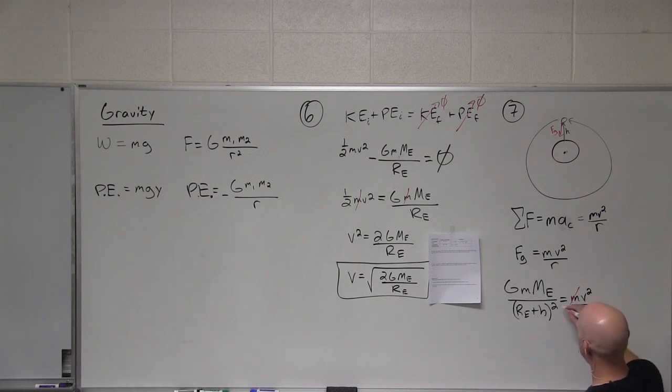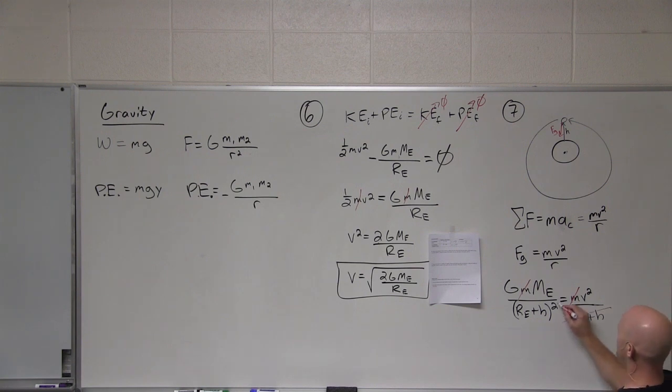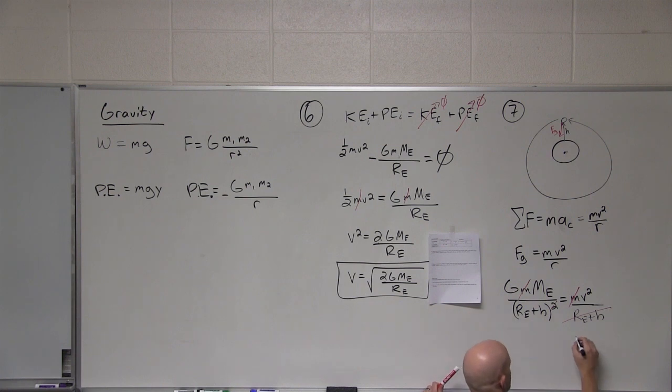And this is equal to mv squared over r. Notice the mass of the satellite, yet again, does not matter. And we were just asked for the speed. And so, we're going to solve for v here. Oh, what's this r right here as well, by the way? That's also radius of the Earth plus h. And if I look, this actually cancels out one of these. So, we're left with v squared equals G times mass of the Earth all over the radius of the Earth plus h. And we'll take the square root. Awesome.